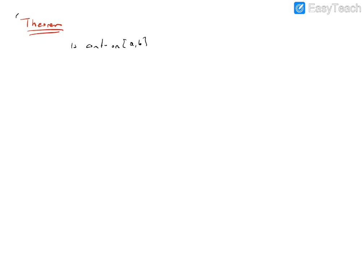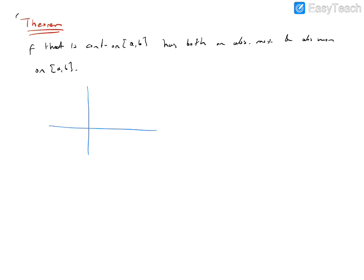The function f that is continuous has both an absolute maximum and absolute minimum on the interval [a, b]. For example, if you consider the previous example on the closed interval, this point is the absolute maximum value — at point b, that is f of b. This is a local maximum, this is a local minimum, and you should compare these values to determine the absolute minimum.